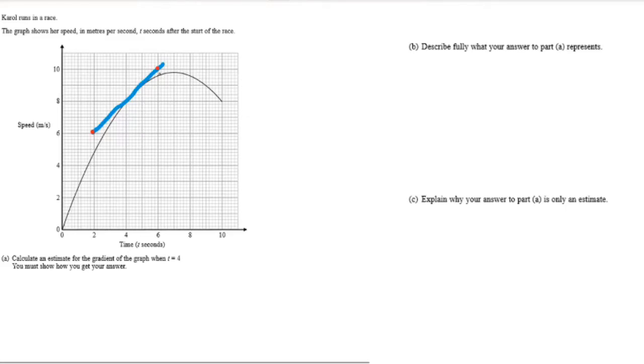To then just read how much we went up and how much we went across. So, here, this is 10, this is 6, so that's a difference of 4. Here, this is at 6, this is at 2, so that's also a difference of 4. So, speed over time, so 4 over 4, that gets a gradient of 1.